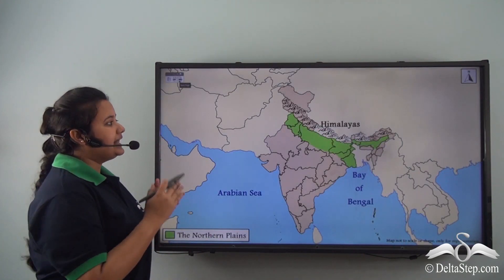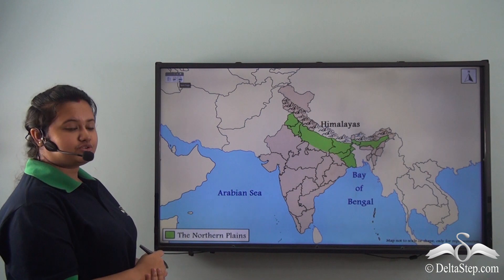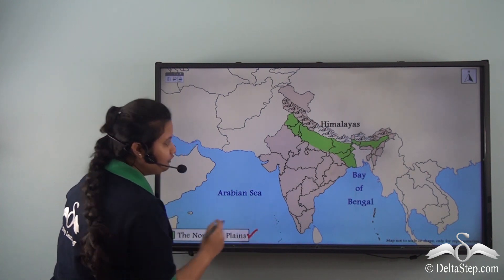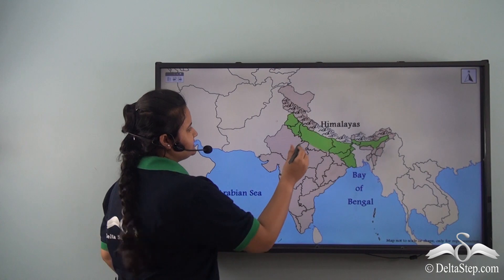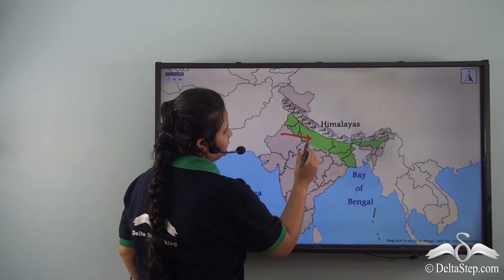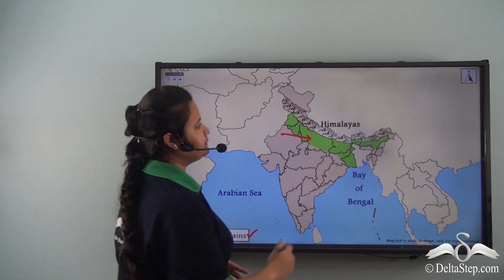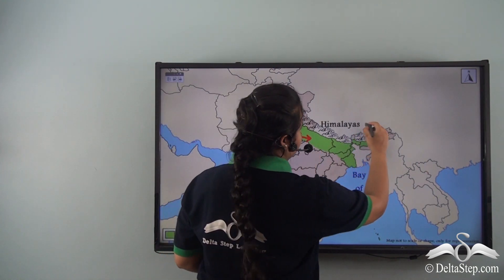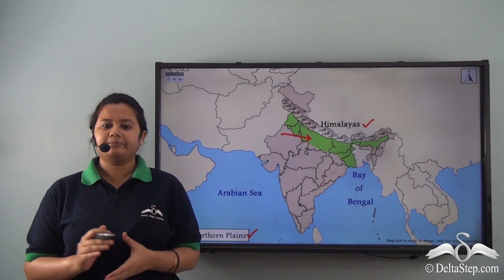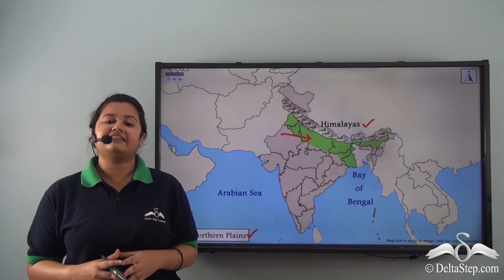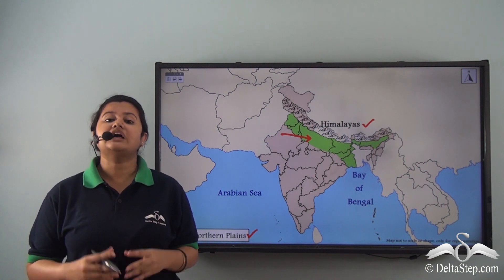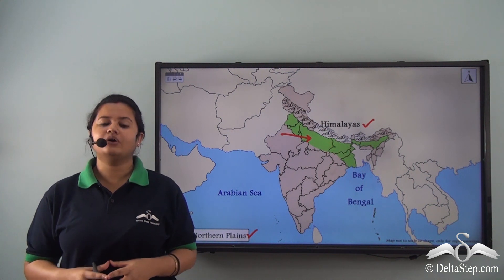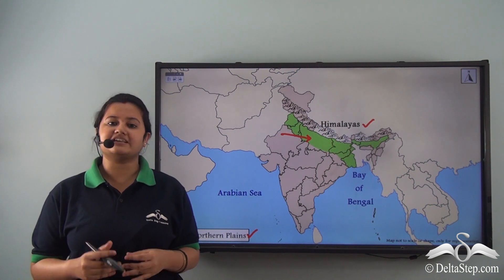Look at this map. This map shows the northern plains of India. See the northern plains — this region is located just below the Himalayas. The northern plains are very fertile and they are rich in alluvium, and therefore they are called alluvial plains. So now let us discuss how these plains are formed.